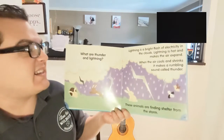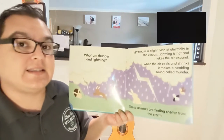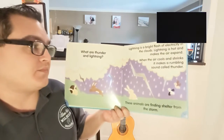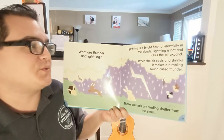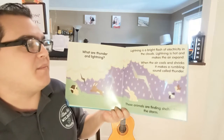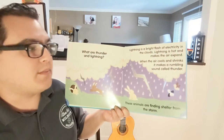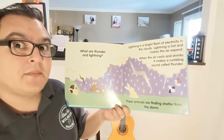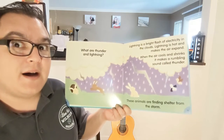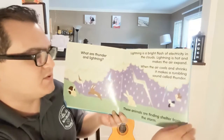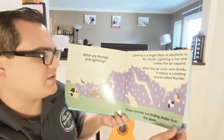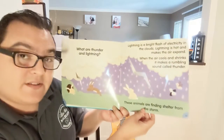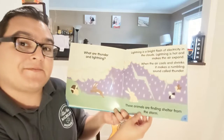Lightning is hot and makes the air expand. When the air cools and shrinks, it makes a rumbling sound — that's thunder! These animals are finding shelter from the storm. They have to go home so they stay dry and safe.